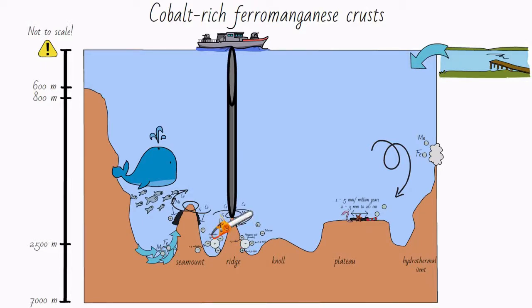One advantage of cobalt crust harvesting versus manganese nodule and massive sulfide harvesting is that cobalt crusts are not covered by a layer of sediment, so the occurring plume while harvesting would be smaller than while harvesting the other resources. Retrieving the cobalt crust could eventually mean a loss of biodiversity and a loss of commercial fish.